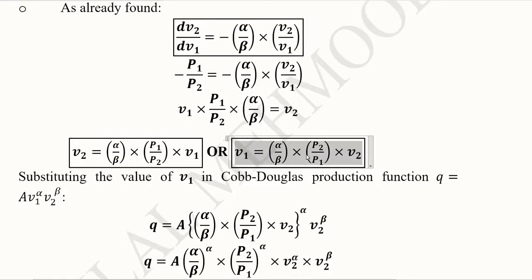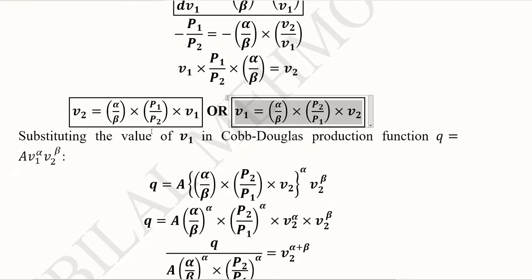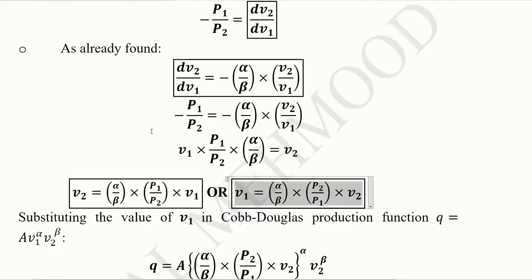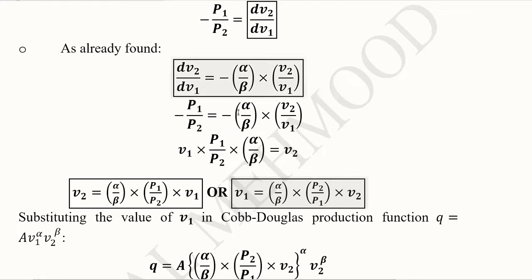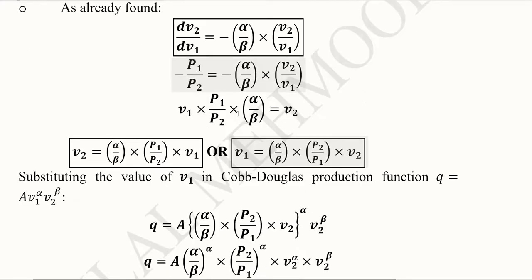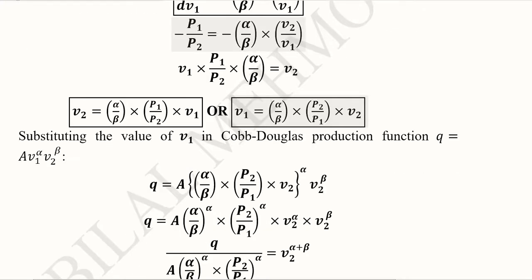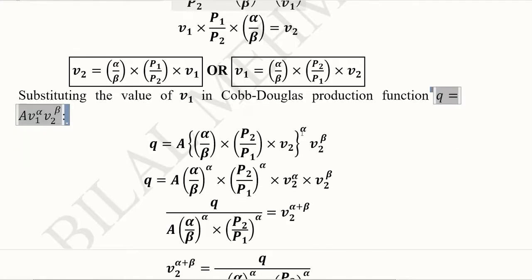However, these are not yet the values we are looking for, because the conditional input or factor demand function requires a certain level of output in it as well, in addition to the input prices. So we have to bring in the output variable. For that, we recall the Cobb-Douglas production function on the basis of which all these steps have been developed.